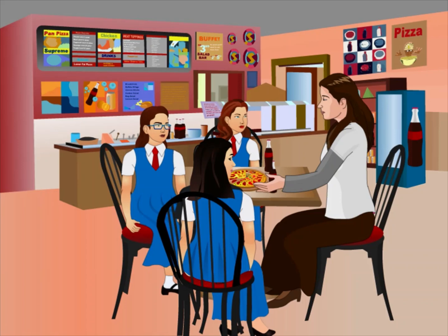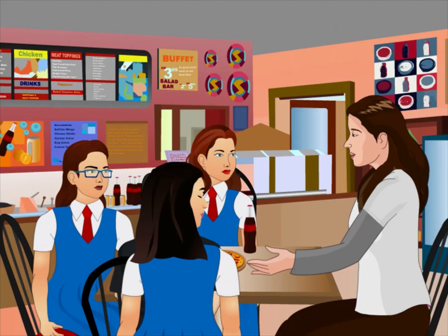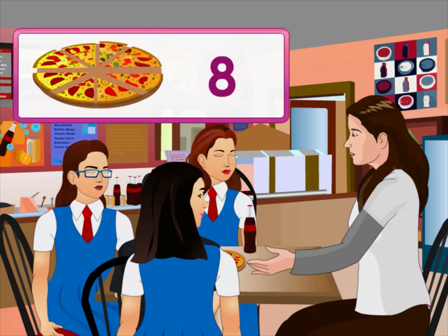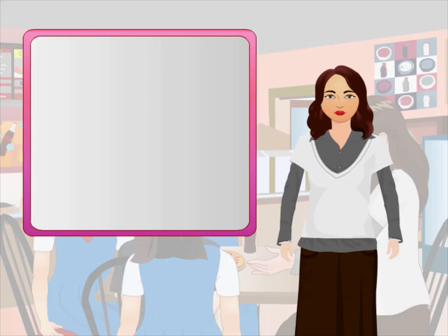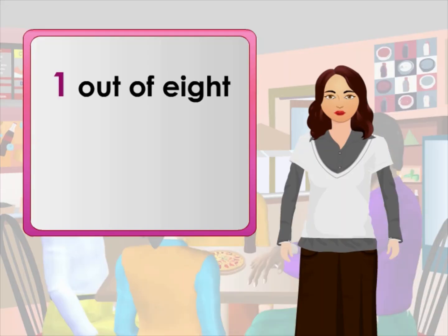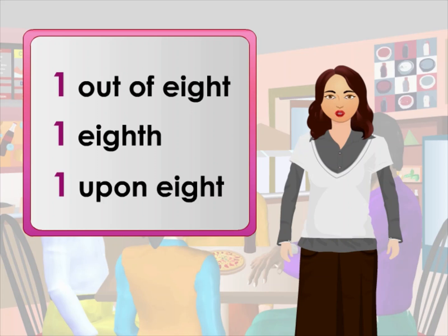Arvind and his family are having pizza in a restaurant. While the food is being served, his father asks: how many pieces of pizza are there in the pan? Eight pieces. Do you know the fraction for each piece? I know, it's one over eight. Yes, we can also say it as one out of eight, one eighth, or one upon eight.